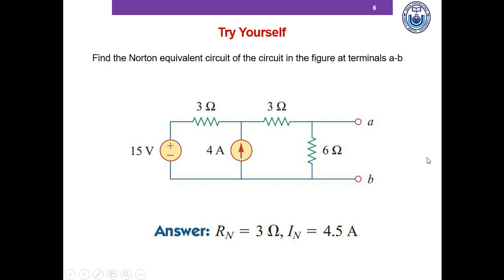To determine the Norton resistance, we replace the voltage source with a short circuit and open circuit the current source. We see that 3 ohm and 3 ohm are in series, making 6 ohm, and that 6 ohm is in parallel with the 6 ohm resistor. So the Norton resistance — which equals the Thevenin resistance — is 3 ohm.